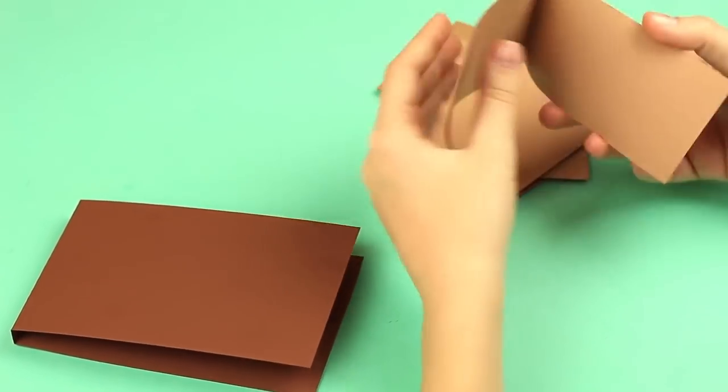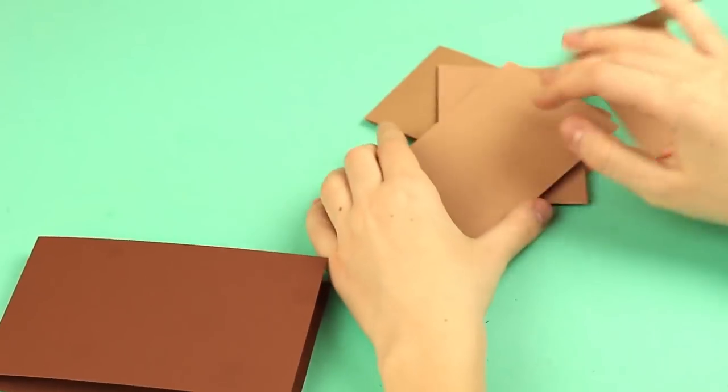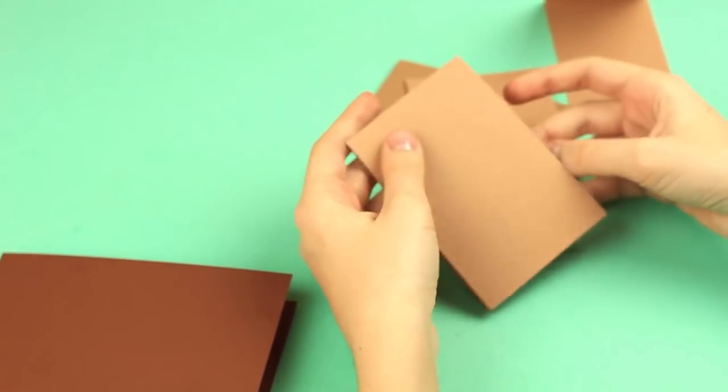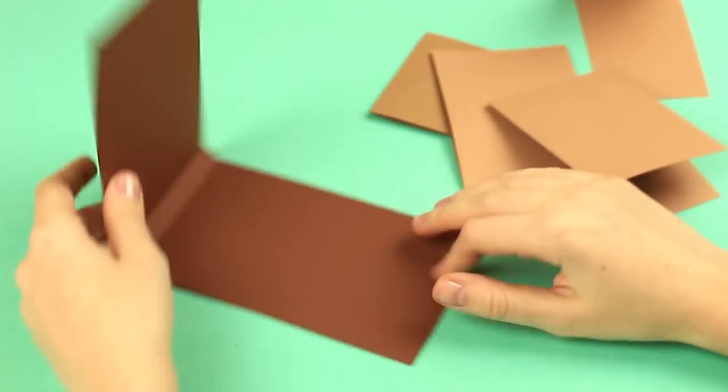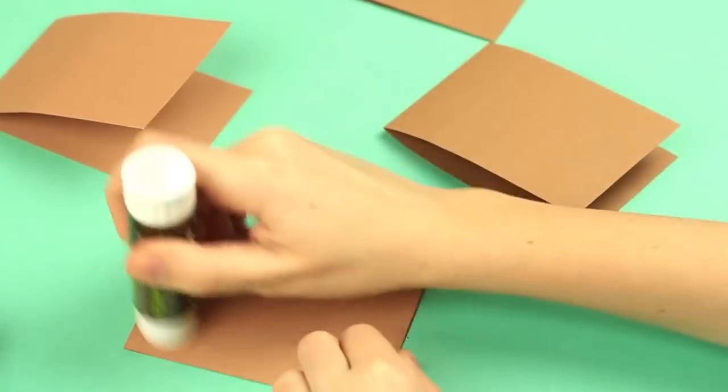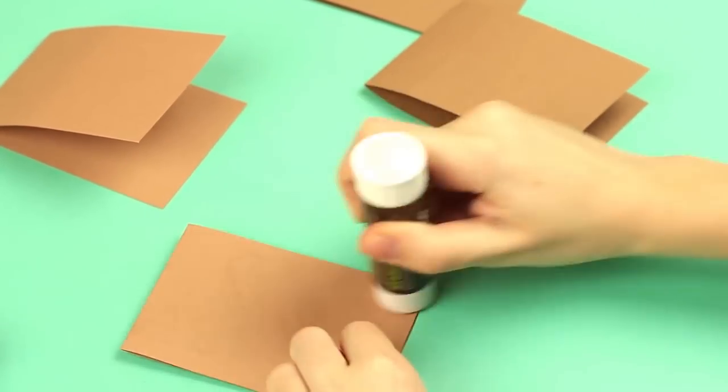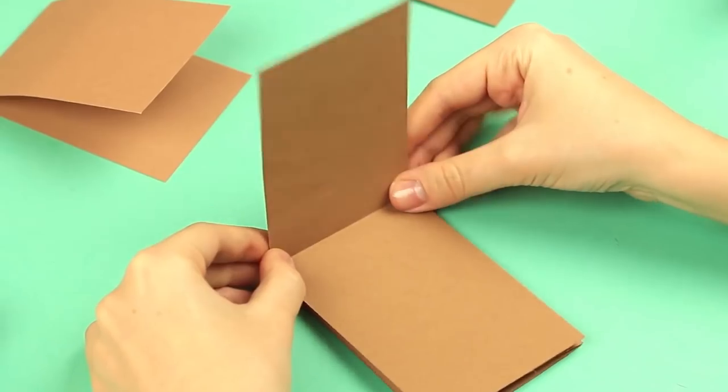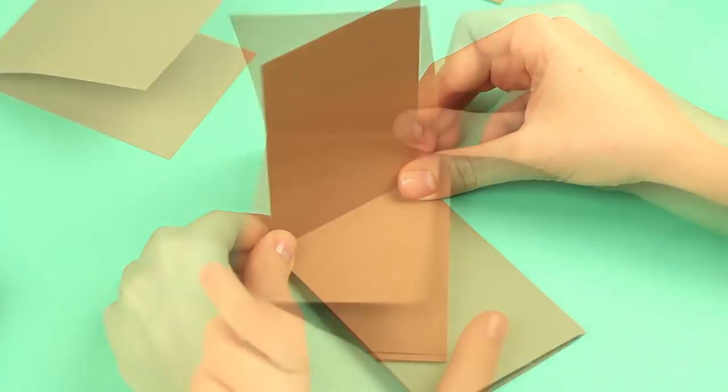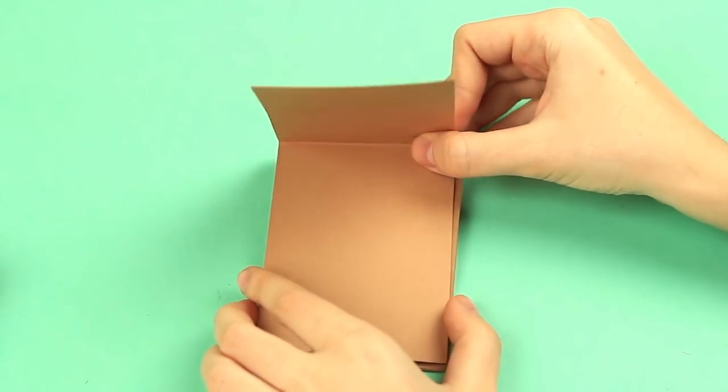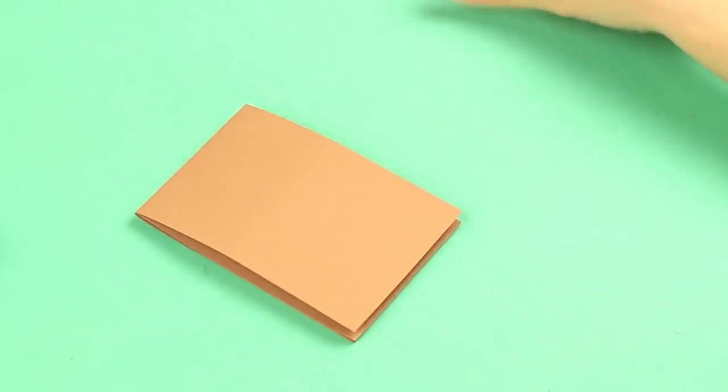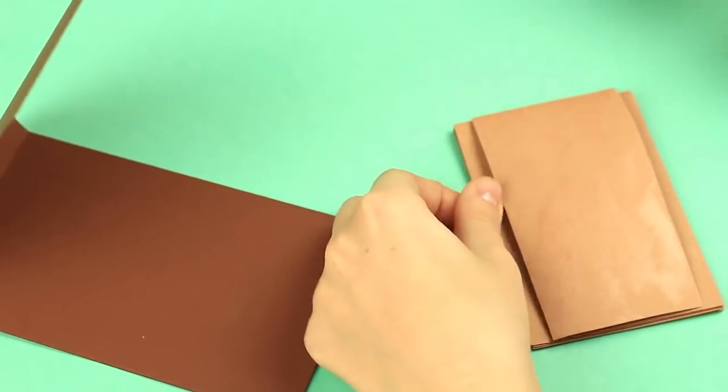Let's make pages from brown craft paper a few shades lighter. We've taken pages a bit smaller in size than the cover. They should be folded in half. Glue the pages one by one. We use a glue stick, but white glue will do well. Stick all the pages in one pad. Attach the pages to the cover.